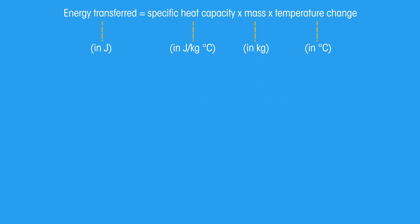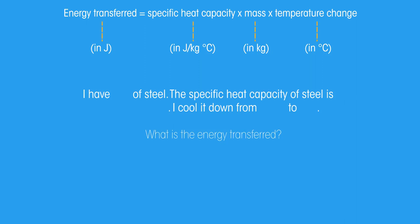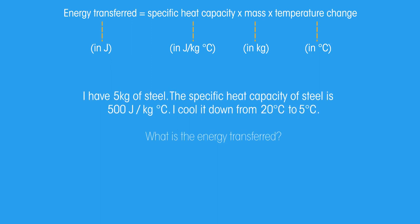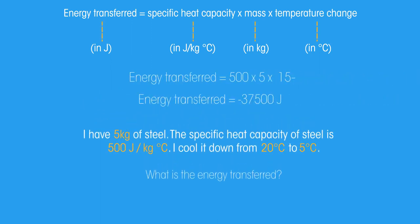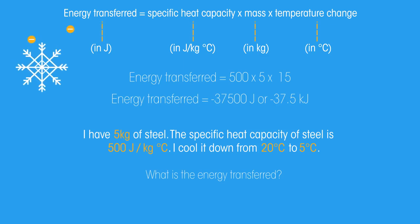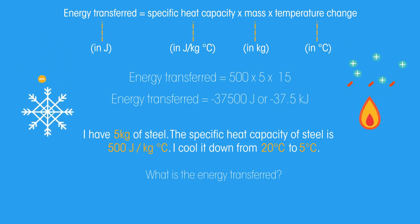Here is another practice problem. Pause the video and attempt to calculate the energy transferred to the lead. Did you get it right? We could divide by 1000 to turn the answer into kilojoules. Notice that the answer is negative this time. It's because we cooled the lead. The temperature change will always be negative if it is being cooled and positive if it is being heated.